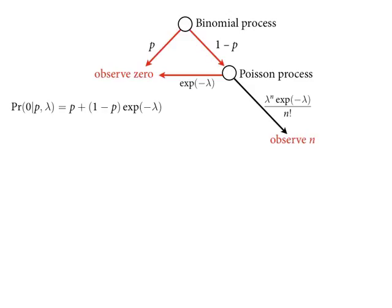This is all probability theory is — it's just 'and' and 'or.' Write down all the things that can happen, figure out all the ways they could happen, count up all the ways any particular event can arise. Next step: what if it's not a zero? Conditional on not observing a zero, the chance is 1 minus p, times the probability of any value n greater than zero — which is lambda to the n times e to the minus lambda over n factorial.